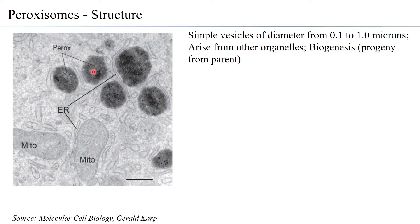These are simple vesicles of a diameter of anywhere from 0.1 to 1 micron, so the size can vary depending on how much metabolism is happening within the peroxisome.